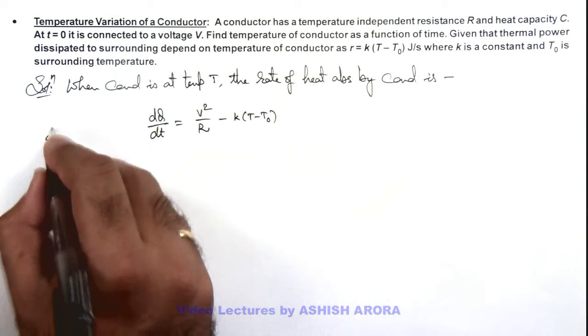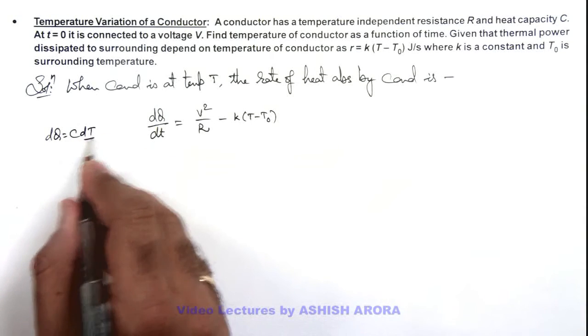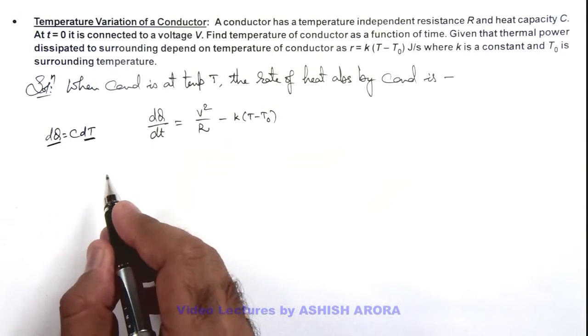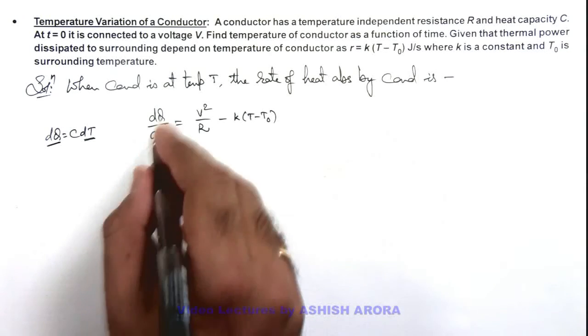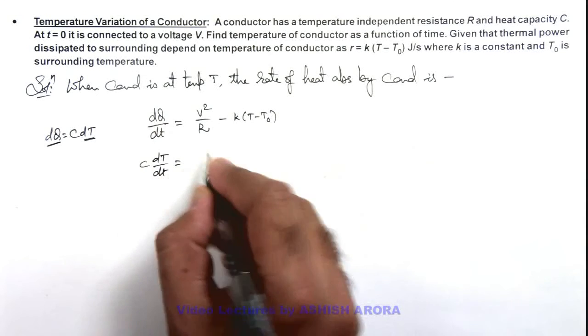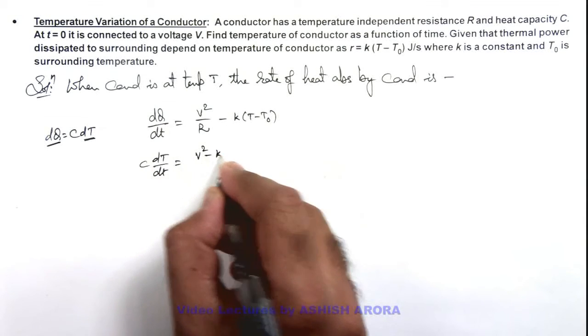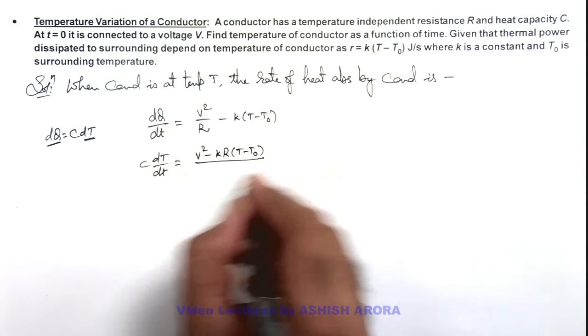And here we can write dQ as C dT, if dT is the rise in temperature due to dQ absorption of heat as C is given as heat capacity. Here we can write it as C dT/dt equals (V² - kR(T - T₀))/R.